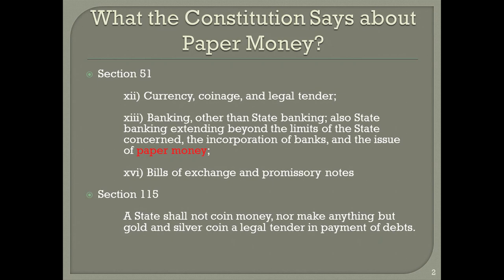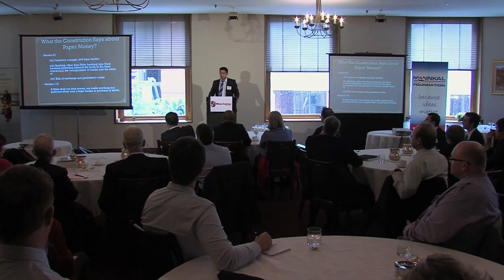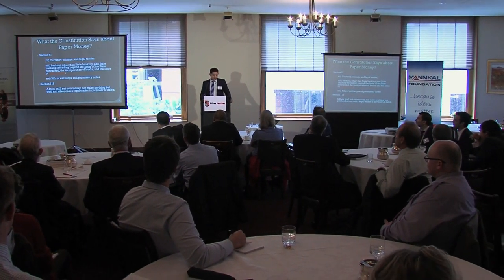Moreover, the Federal Government pursuant to section 51(12) can then declare that issued paper money legal tender. That all seems like a fair enough proposition, but one problem remains — the obstacle of section 115. It states that the states are not allowed to make that federally issued paper money legal tender in the payment of debts. Try that argument next time you get a speeding ticket from the New South Wales Police Department.